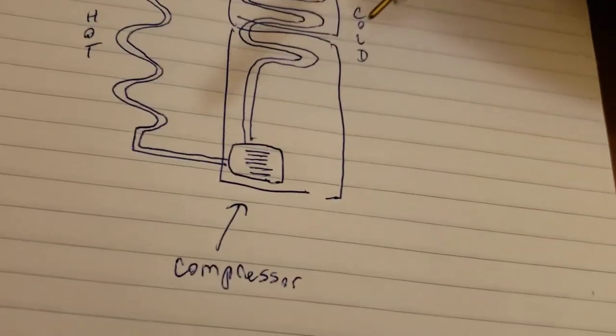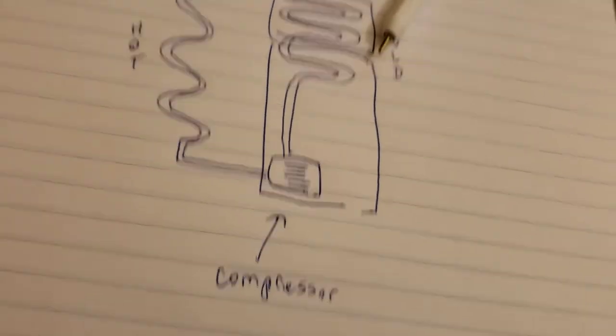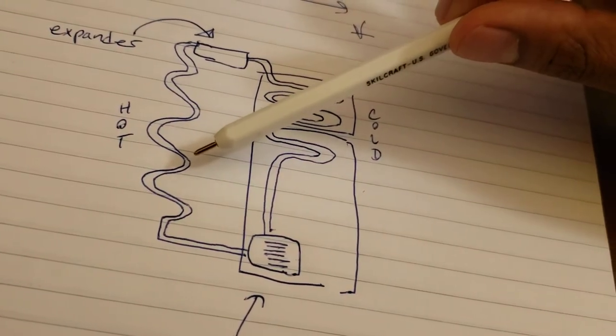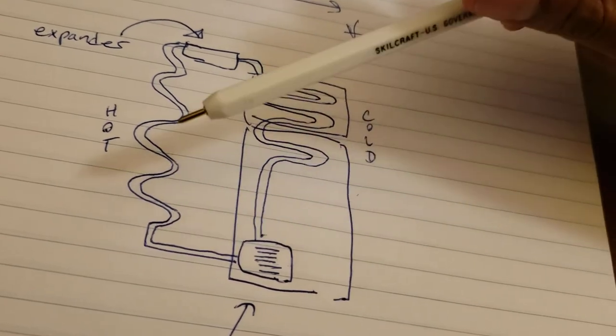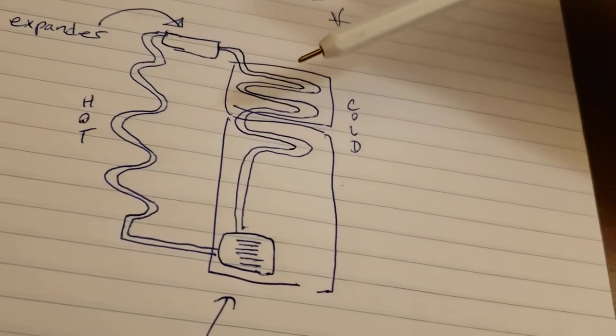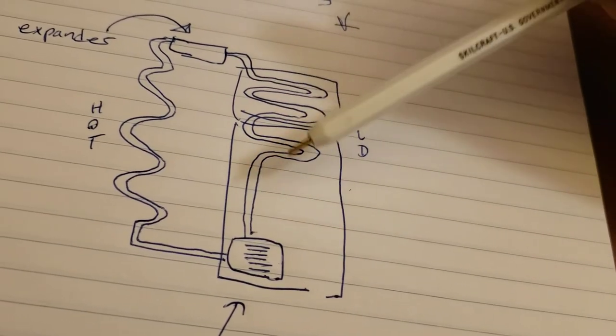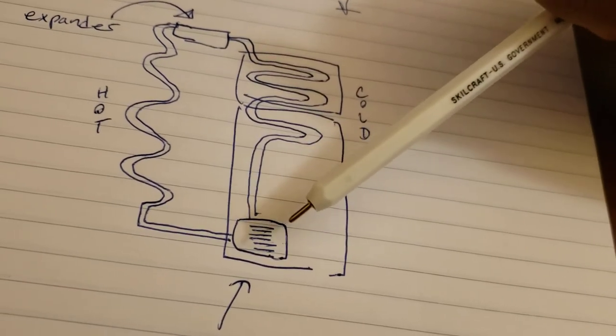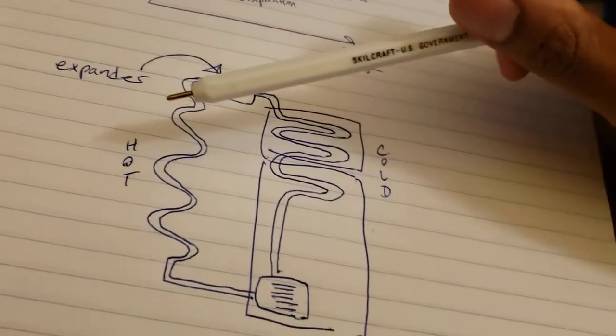All right, so when we compress the substance, basically it's going to get really hot, which draws heat out of the fridge. So we're going to take all the heat from the fridge and it's going to pass through here and then we're going to compress it and it's going to get really hot and therefore be passed to the outside of the refrigerator.